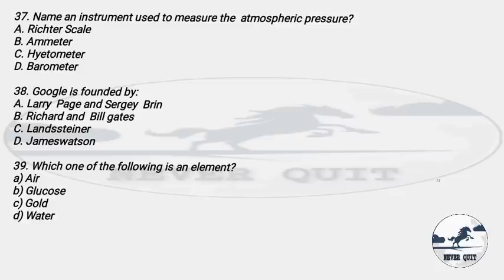Question 37: Atmospheric pressure is measured by which instrument? Options: A) Richter Scale, B) Ammeter, C) Hydrometer, D) Barometer. The right answer is option D — Barometer. We measure atmospheric pressure using a barometer.